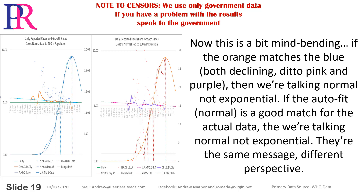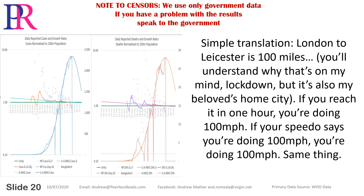Now this is a bit mind-bending. If the orange matches the blue, both declining, ditto pink and purple, then we're talking normal, not exponential. If the autofit normal is a good match for the actual data, then we're talking normal, not exponential. They're the same message, just a different perspective.